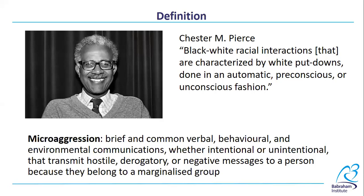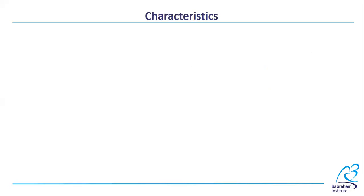That's quite an academic and dense definition, so let's break down those key characteristics. Small — most of the time when we're talking about microaggressions, we're talking about a single sentence. Common — the frequency of microaggressions is one of the factors that makes them most harmful. It's that sort of death by a thousand cuts. Or another analogy: someone stepping on your toe. The first time it happens, it's not a big deal. The 20th time it happens, it's very painful.